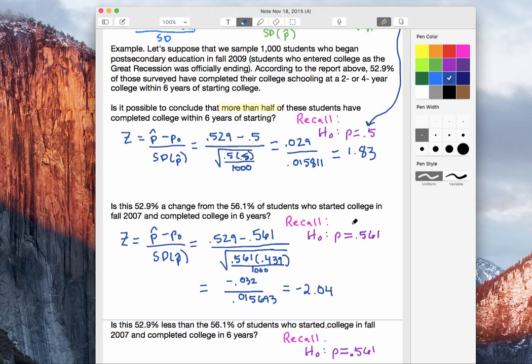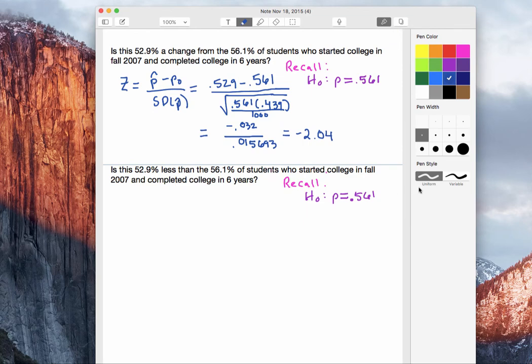All right, and on to the last problem. So let's work smarter instead of harder here. What's different about this problem and the last? Well, the second problem was asking for a change from 56.1%. The third problem is asking if our percent is less than 56.1%. But notice the null hypotheses are exactly the same. So that is all that matters in these problems. They have the same null hypothesis, so our z-score is going to be exactly the same.